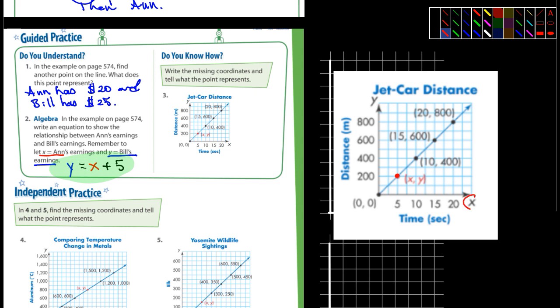Well you can see what x is and you can see what y is - 200. So the missing coordinates would be five comma 200. And it says tell what the point represents: five seconds and 200 meters.